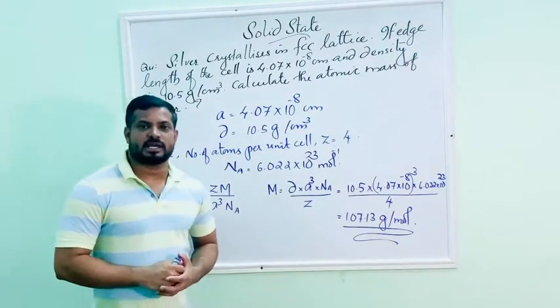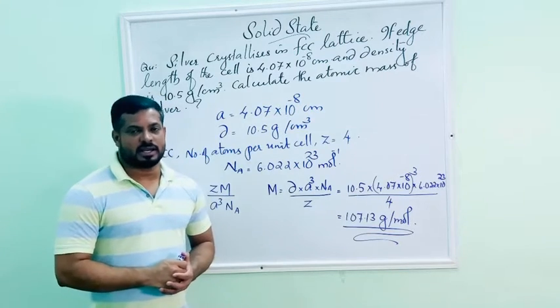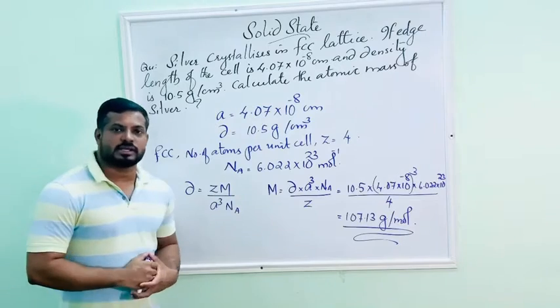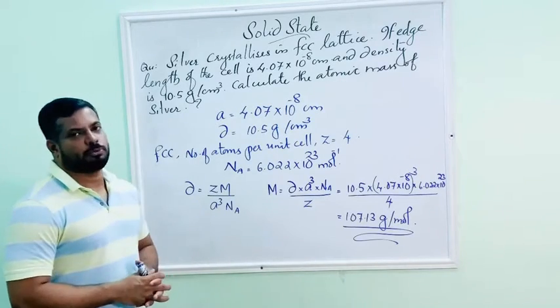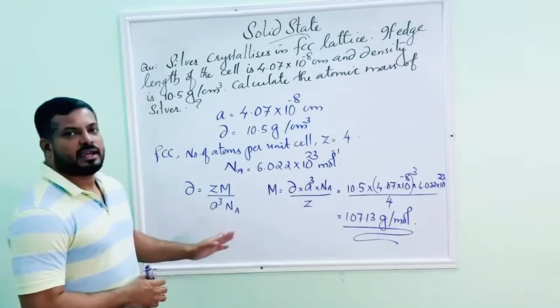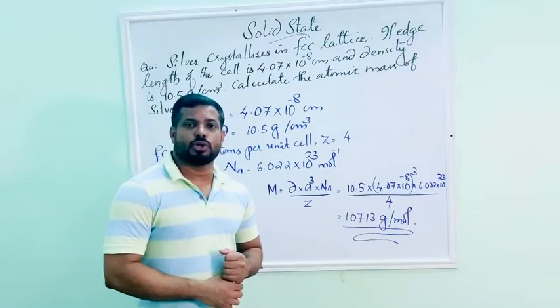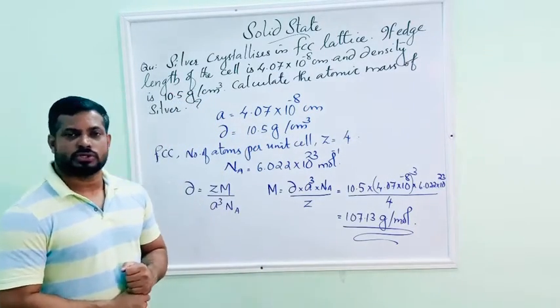Calculate the atomic mass. We have the equation: Density D equals ZM divided by A cube NA. NA is Avogadro number. The value of Avogadro number is 6.022 into 10 raise to 23.